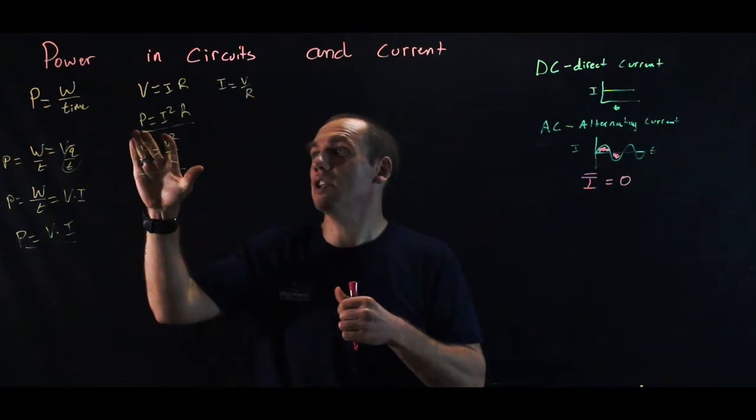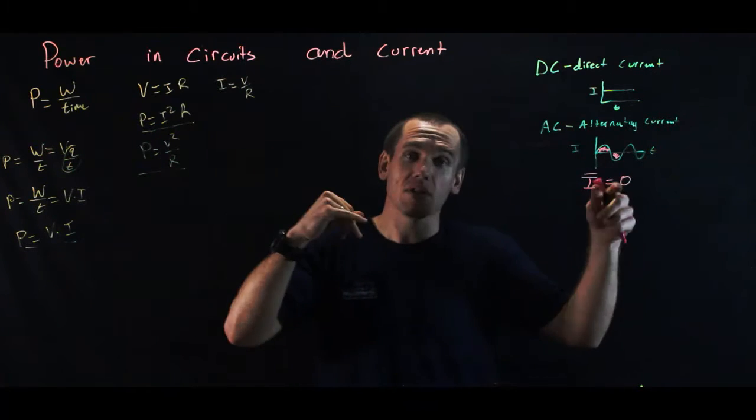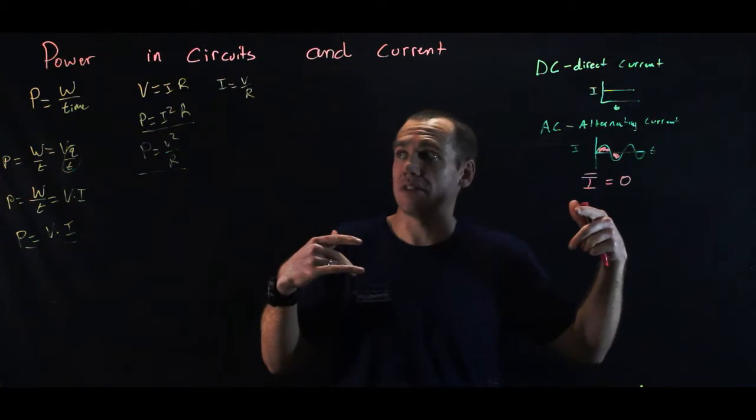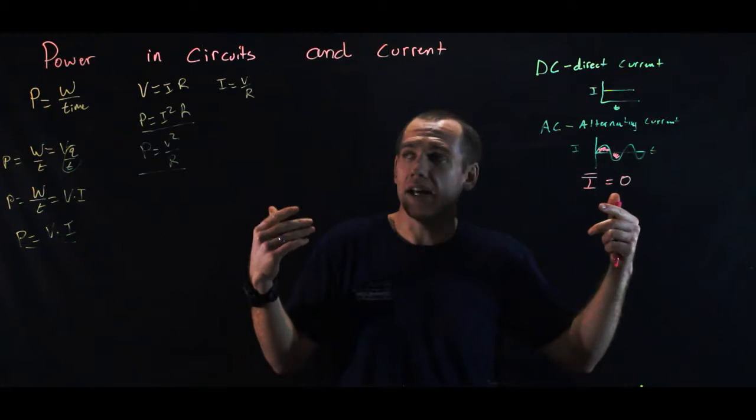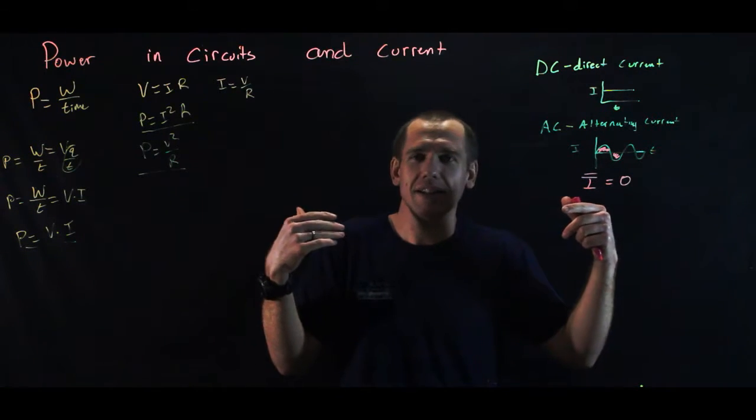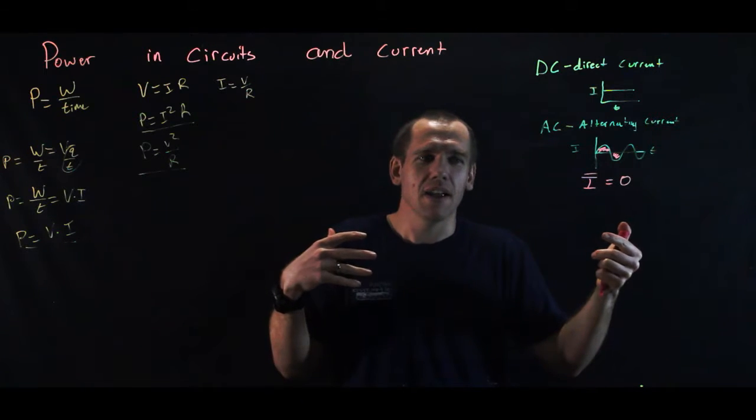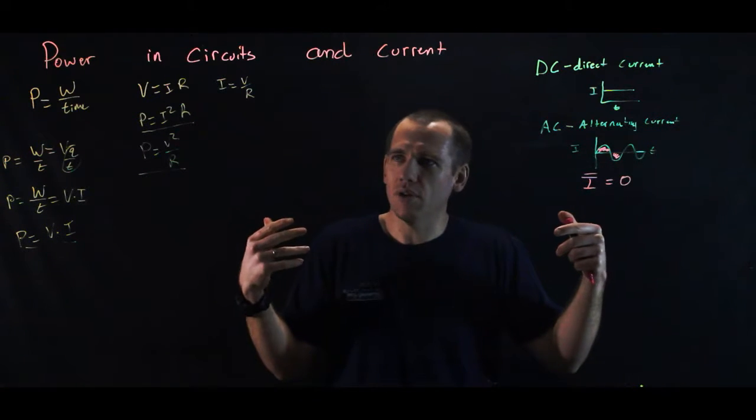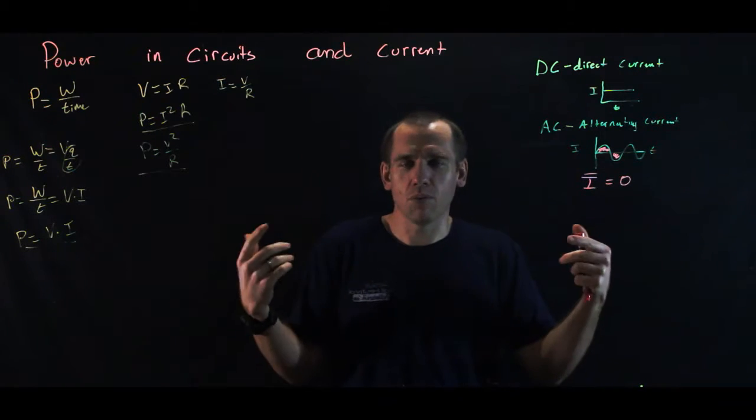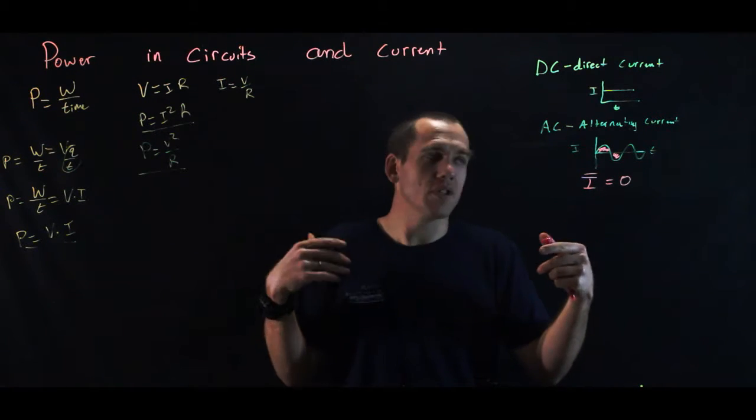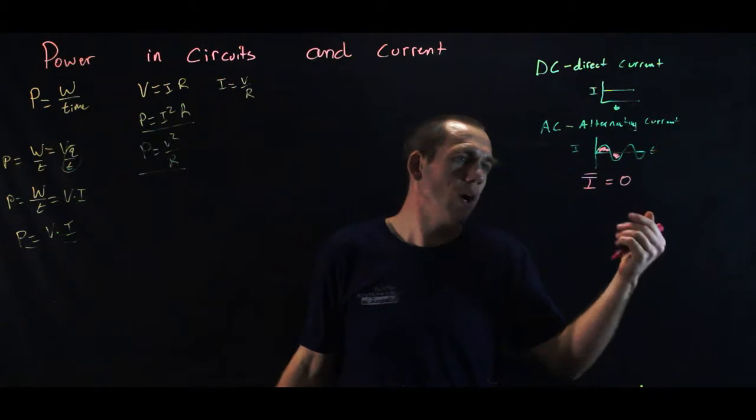Because if we come back to our equation, P equals I squared R. So the sign of the current, positive or negative, doesn't matter. Now, we have to remember current is not actually a vector. The sign tells us not the direction so much as the flow. The direction of current is always parallel to the wire it's in, but it could flow from one end to the other or reverse of that. So the current is reversing direction along the wire.